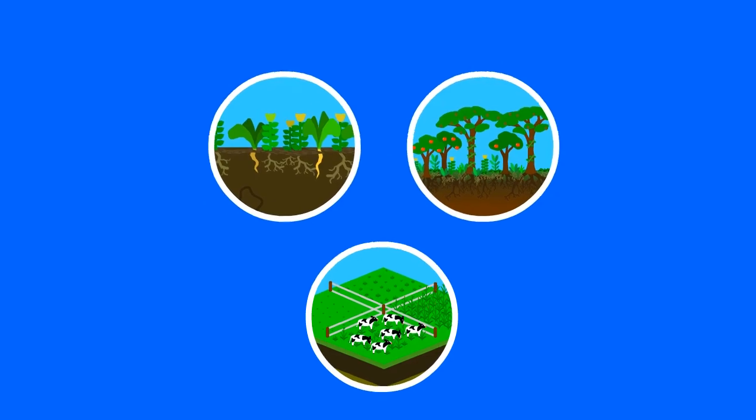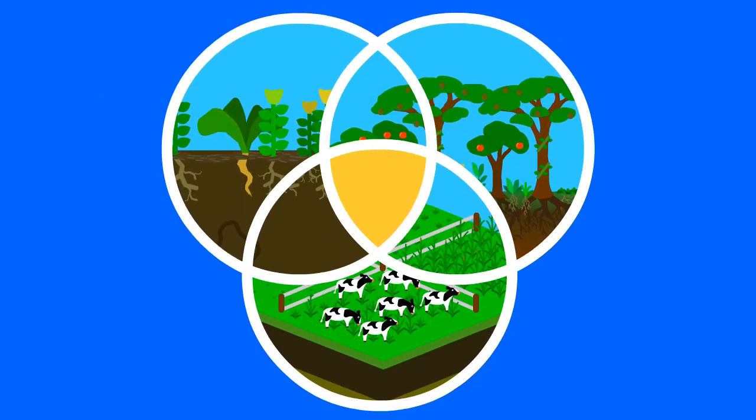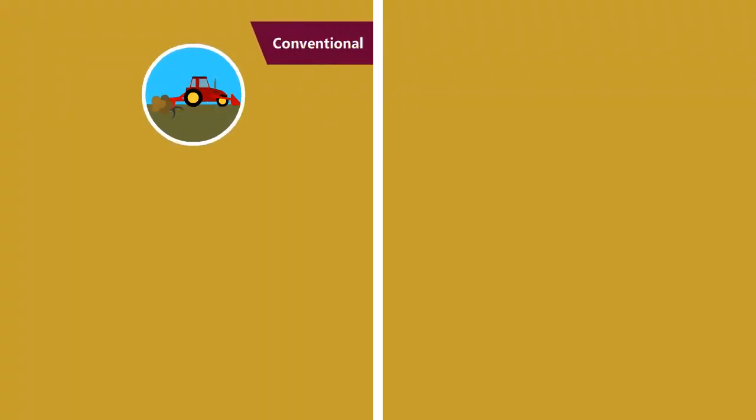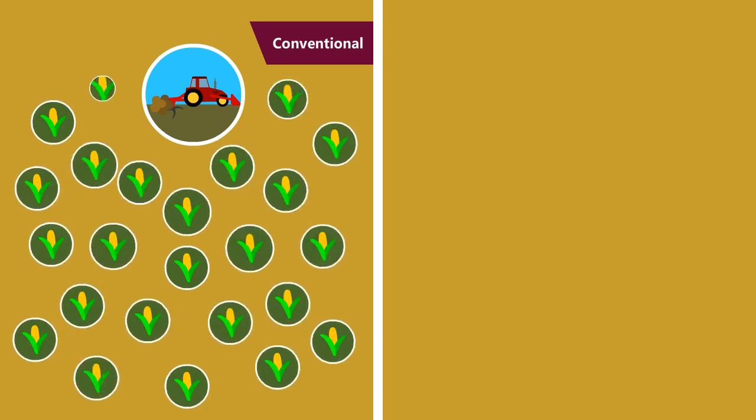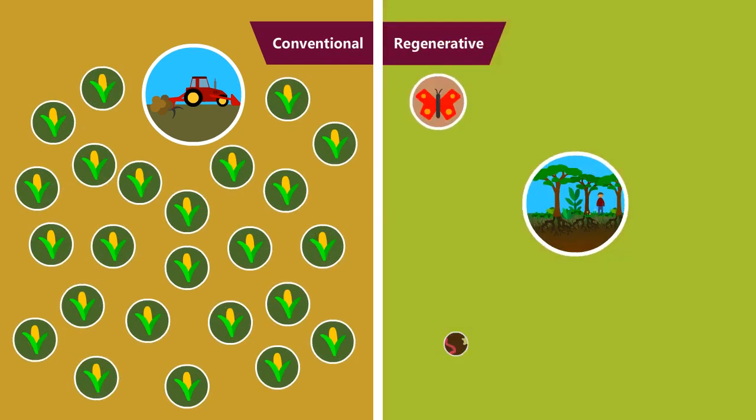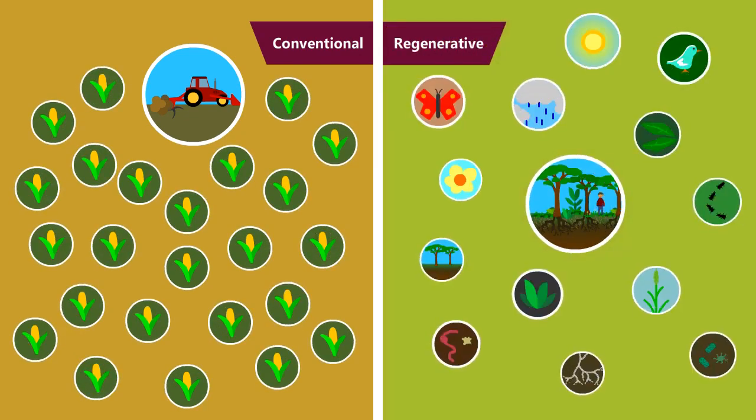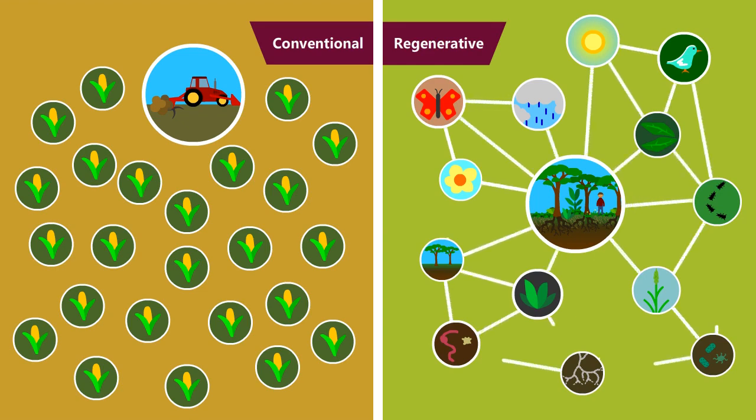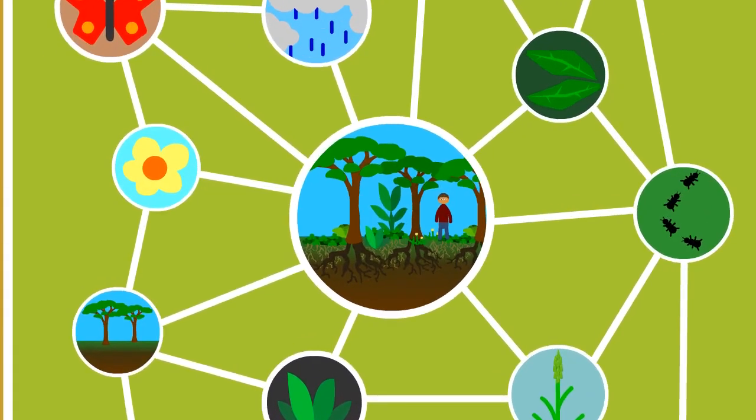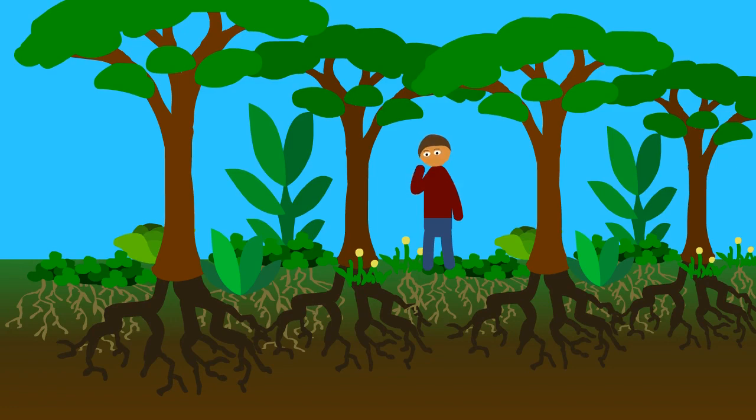These three examples of regenerative agriculture plus all the rest of them all have something in common. Whereas in conventional agriculture you seek to create as many of one thing as possible, in regenerative agriculture you seek to create as many relationships between things as possible. You are one of those things. What sort of relationship with the land do you want to foster?